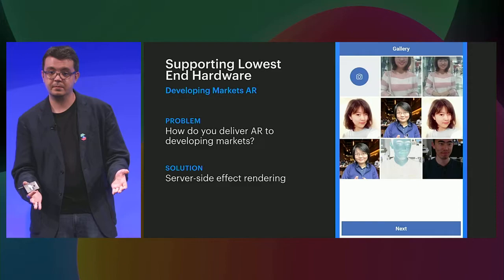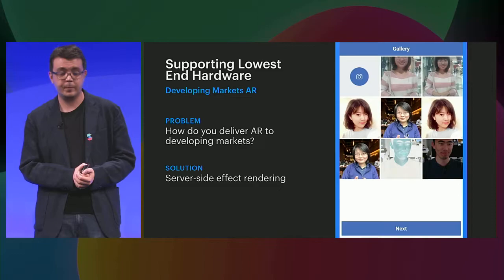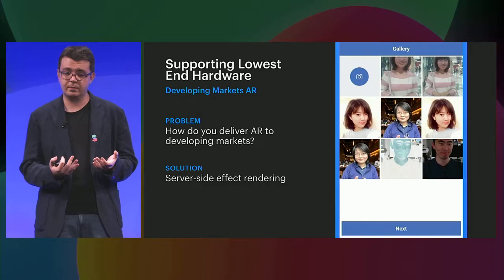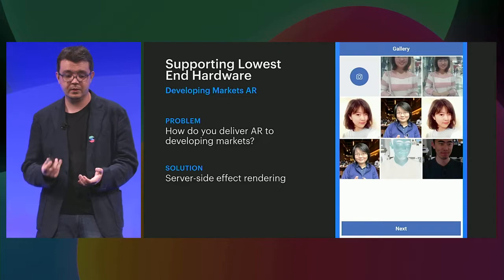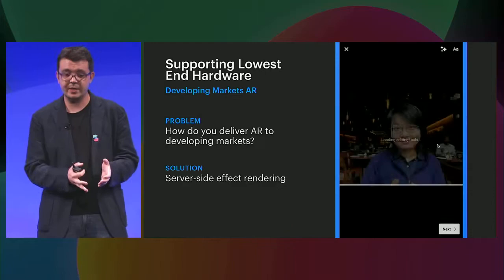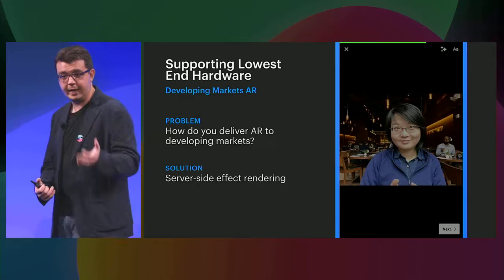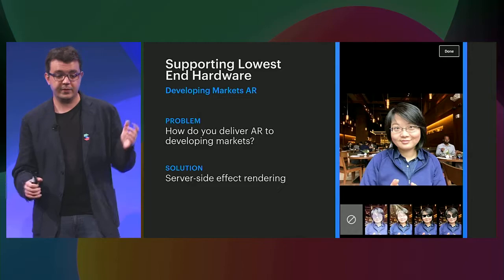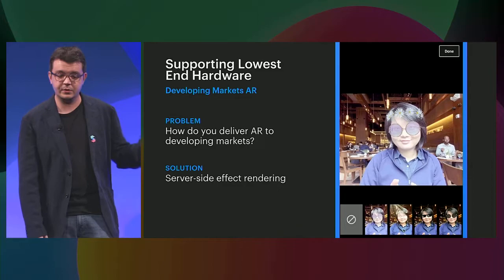Last but not least, developing markets. Merlene talked about emerging markets with 2G connectivity. It turns out that with those markets, there are also a lot of constraints on compute power — we might not be able to run Spark AR engine there. What this means is we're going to take your effects, take the same engine and run it on the server. What you see in the video is Facebook Lite, which is a very small app tailored for developing markets specifically, but this is the same AR, the same effects, same content and experience — just delivered to people that don't have a phone that can run AR.